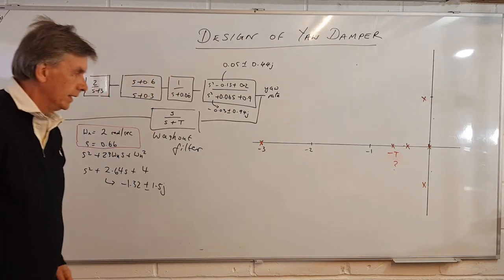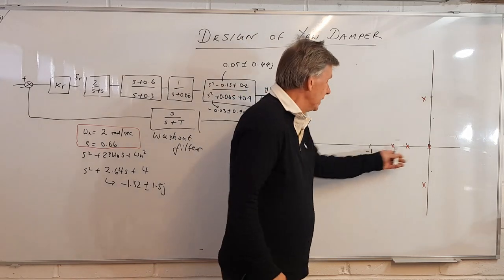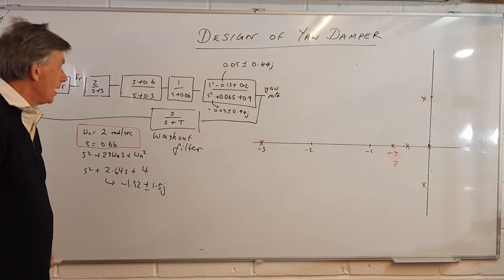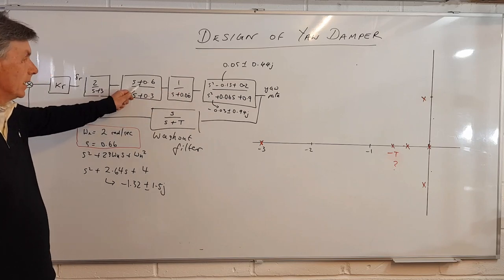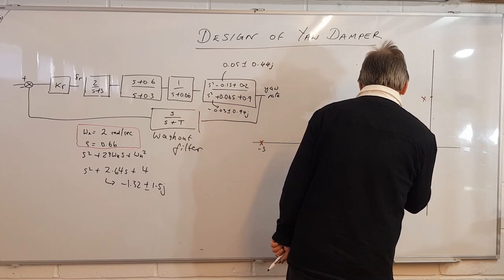So t will be somewhere along here somewhere. We're going to find it using the angle criteria in a second. We've also got a zero at 0.6, so we've got a zero there at minus 0.6, and we've got another couple of zeros which are out here somewhere.